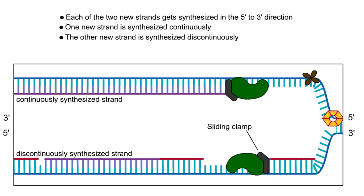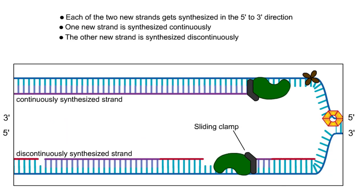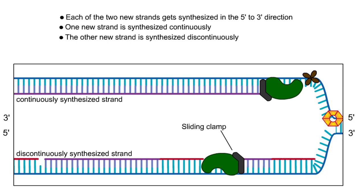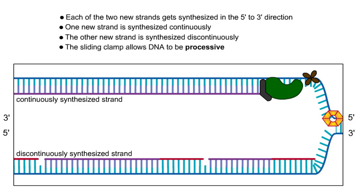The sliding clamp helps hold this DNA polymerase onto the DNA as the DNA moves through the replication machinery. The sliding clamp makes the polymerase processive.